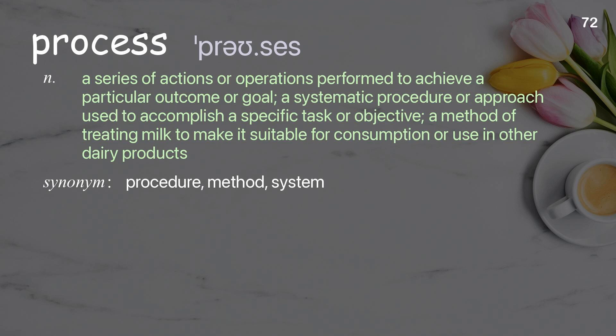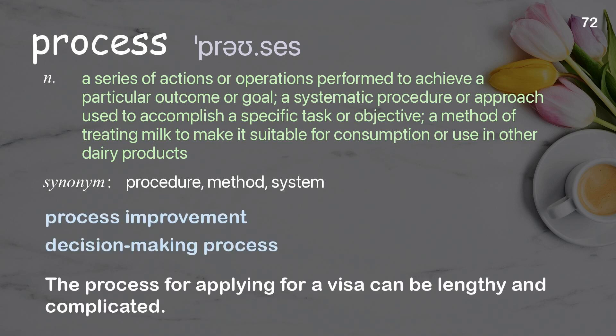Process: a series of actions or operations performed to achieve a particular outcome or goal; a systematic procedure or approach used to accomplish a specific task or objective. Examples: process improvement, decision-making process. The process for applying for a visa can be lengthy and complicated.